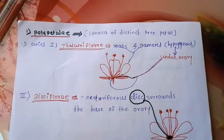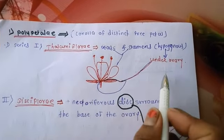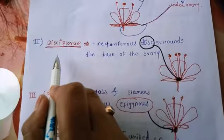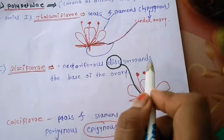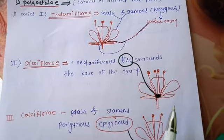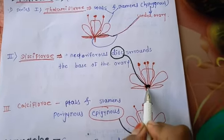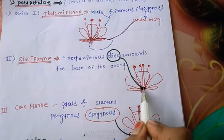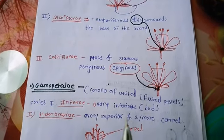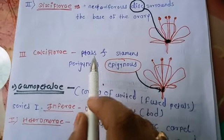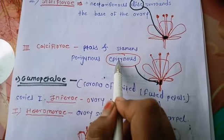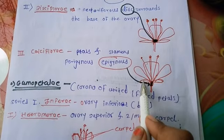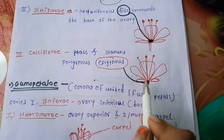The second series is disciflorae, which has a nectary disc-like structure — a nectary used in pollination. The third series is calyciflorae, where petals and stamens are perigynous or epigynous — inserted around or above the ovary.